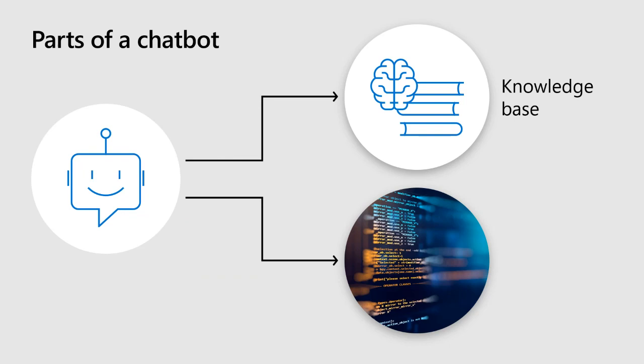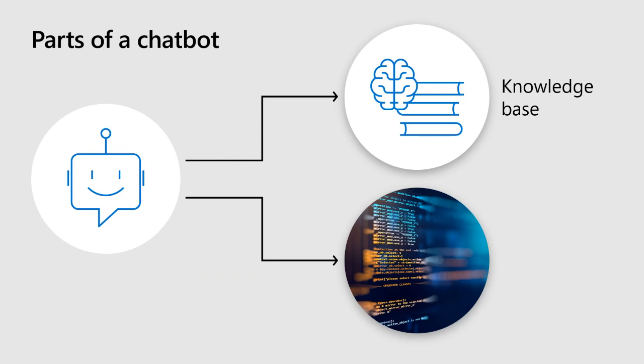There are quite a few parts of a chatbot, but two parts I really want to focus on are the knowledge base and the code — though a bot doesn't always necessarily need code, sometimes it's a necessity. The knowledge base is going to be all the information the bot needs to do its job: the questions the user might ask, maybe some external connections it might need. This is where the bot knows what to do, and the code helps with that as well.